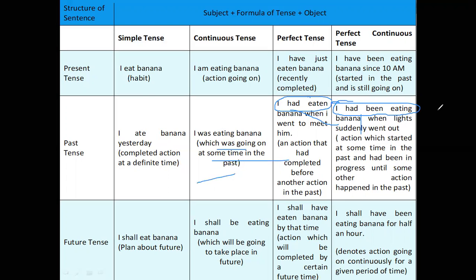Future tense. Simple future tense: 'I shall eat banana' — it expresses a plan. Future continuous tense: 'I shall be eating banana' — this expresses the expectation of an action which will be going on in the future. Future perfect tense: 'I shall have eaten banana by that time' — used to express an action which will be completed by a certain future time. Future perfect continuous tense: 'I shall have been eating banana for half an hour' — it indicates an action going on continuously for a given period of time.